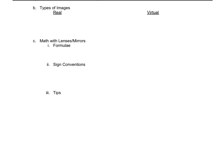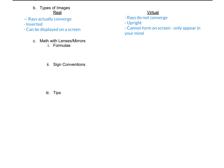Let's talk about the differences between real images and virtual images. With a real image, the rays actually converge. With a virtual image, they don't actually converge — the image is formed in your mind because to your eyes it appears as though they converge. Real images are always inverted, whereas virtual images are always upright. Finally, real images can be displayed on a screen, because the rays actually converge there, whereas virtual images cannot form on a screen.